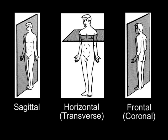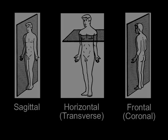Sagittal planes are vertical planes that pass through the body from front to back. The median or mid-sagittal plane is the vertical plane that divides the body into right and left halves. Horizontal or transverse planes are parallel to the floor and are perpendicular to both the sagittal and the frontal planes. The frontal or coronal planes are vertical planes that pass through the body from side to side, perpendicular to the sagittal plane.